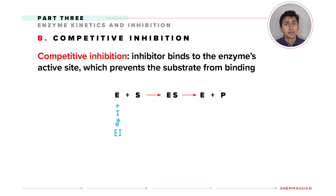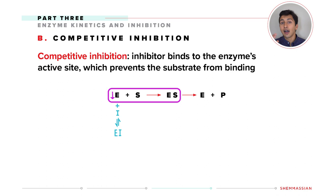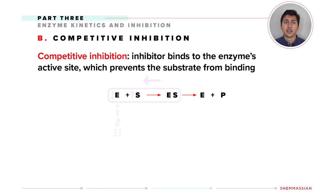Let's think back to Le Chatelier's principle. If the enzyme is binding the inhibitor, it looks like the concentration of free enzyme is going down because it's being bound up by the inhibitor. As such, the first reaction will move to the left in order to replace that missing enzyme, and the amount of substrate will actually increase. Since the inhibitor is not binding to the enzyme-substrate complex, if we can form the enzyme-substrate complex, we'll still be able to carry out the forward reaction. As such, Vmax will be unchanged.